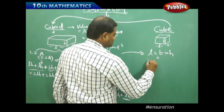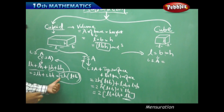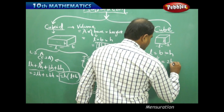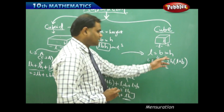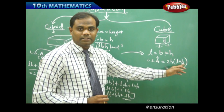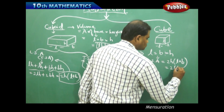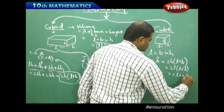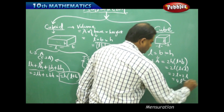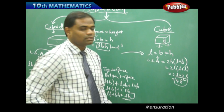The LSA of a cube is derived from 2H(L + B) by substituting H = L and B = L. This gives 2L(L + L) = 2L × 2L = 4L². So the lateral surface area of a cube is 4L².